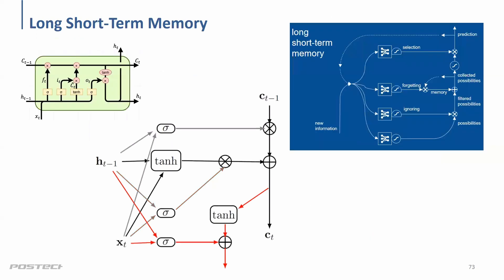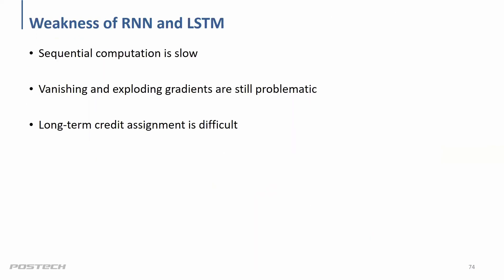The weakness of RNN and LSTM is that sequential computation is extremely slow. Even with LSTM ideas, vanishing or exploding gradients are still problematic — there are a lot of issues. So it's extremely difficult to get good results. When you deal with sequential data sets, think about RNN or LSTM structures, but remember it's difficult to train and has many drawbacks.